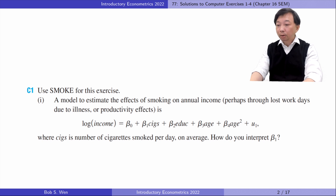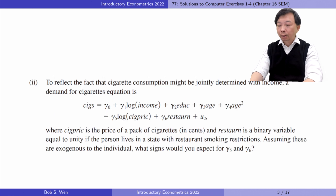One more cigarette smoked per day is estimated to change income by 100 times Beta 1 percent, holding education and age fixed. In Part 2, to reflect the fact that cigarette consumption might be jointly determined with income, a demand for cigarettes equation is as follows.